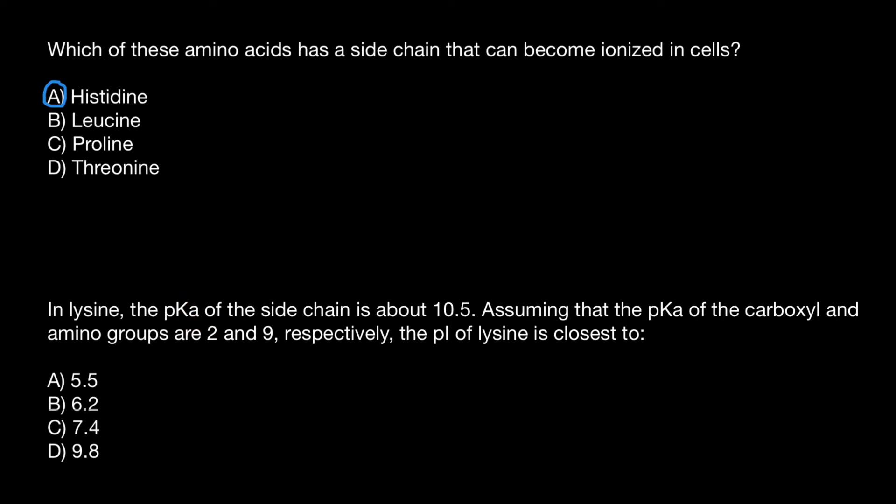In lysine, the pKa of the side chain is about 10.5. Remember that lysine is one of those three amino acids, along with histidine, whose side chain can get ionized and be positively charged at physiological pH. Assuming the pKa of the carboxyl and amino groups are 2 and 9 respectively, the pI or isoelectric point of lysine is closest to which answer?